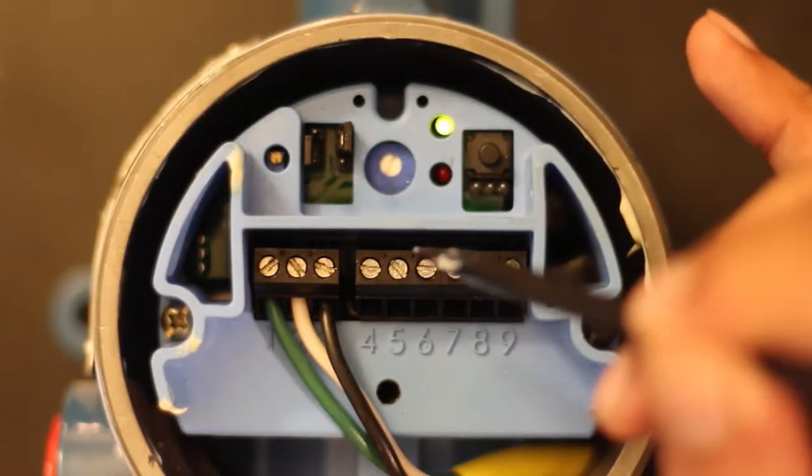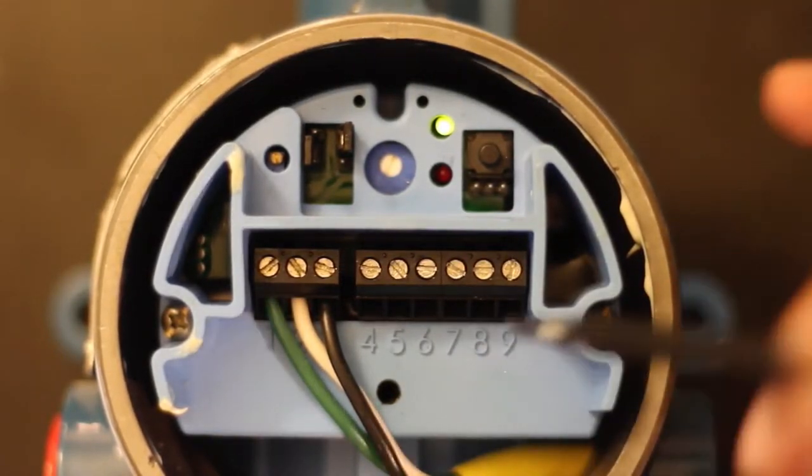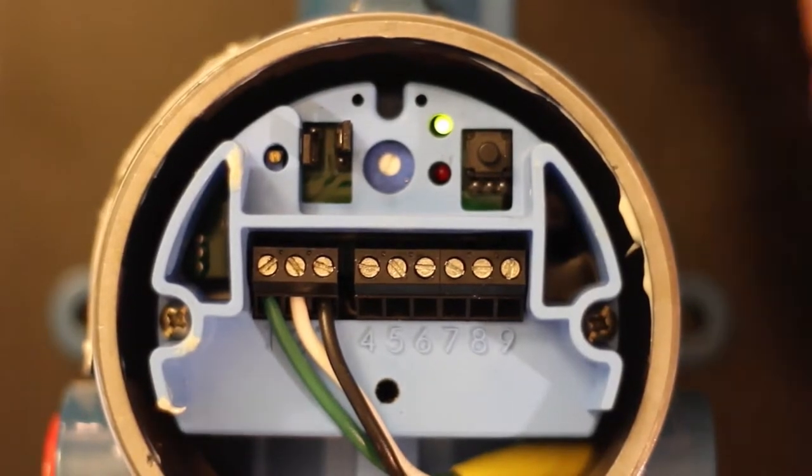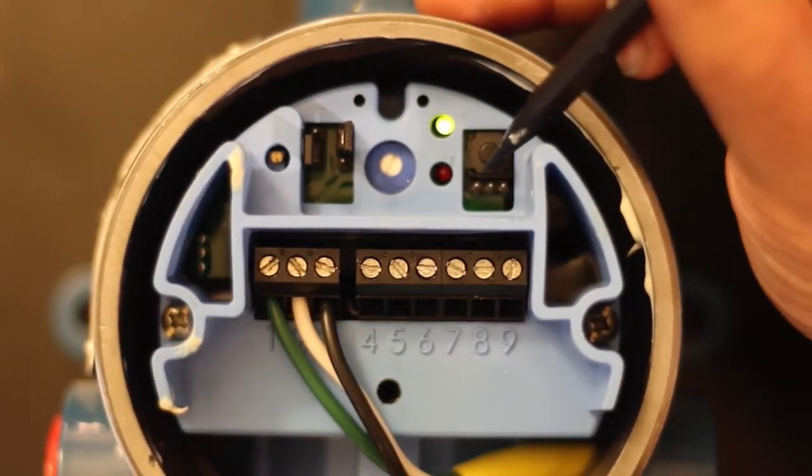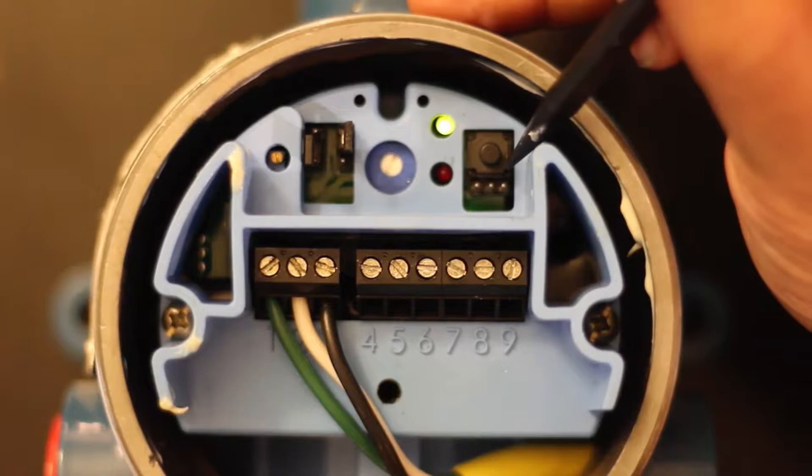You have your double pole double throw relay connections from four through nine. Going over to the other side of the unit, you have a three pin connector. This will be used to change the calibration modes on the unit.